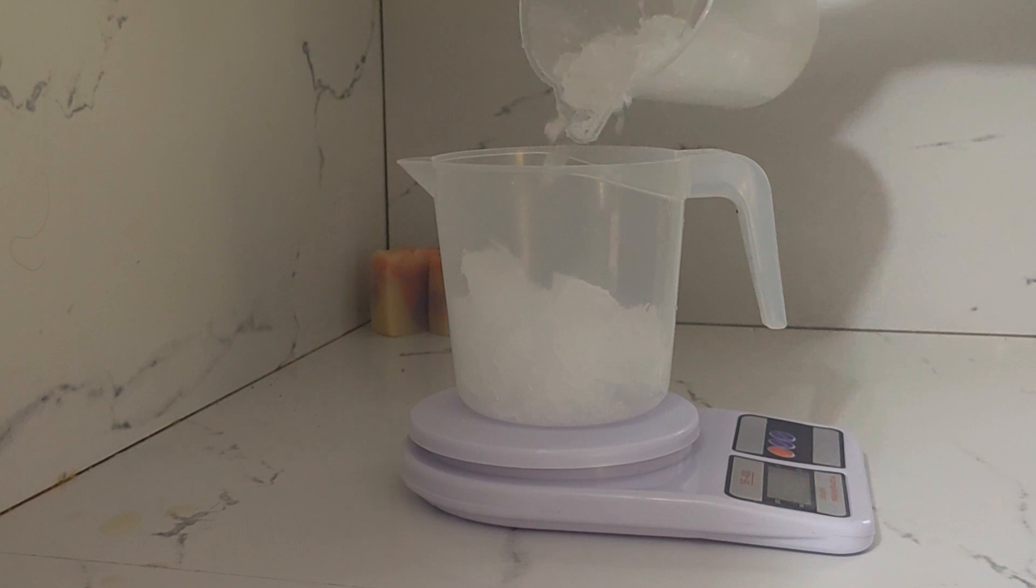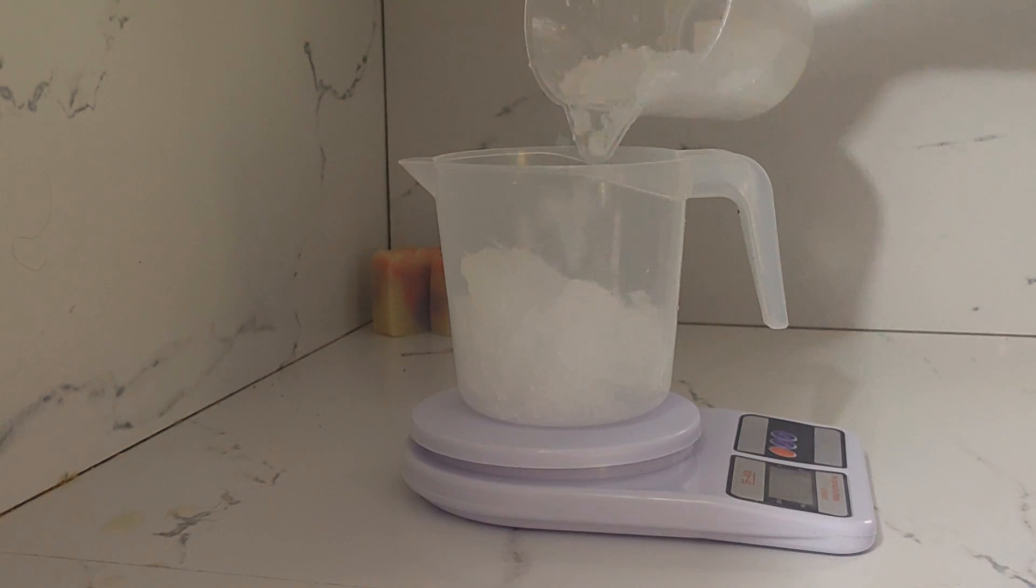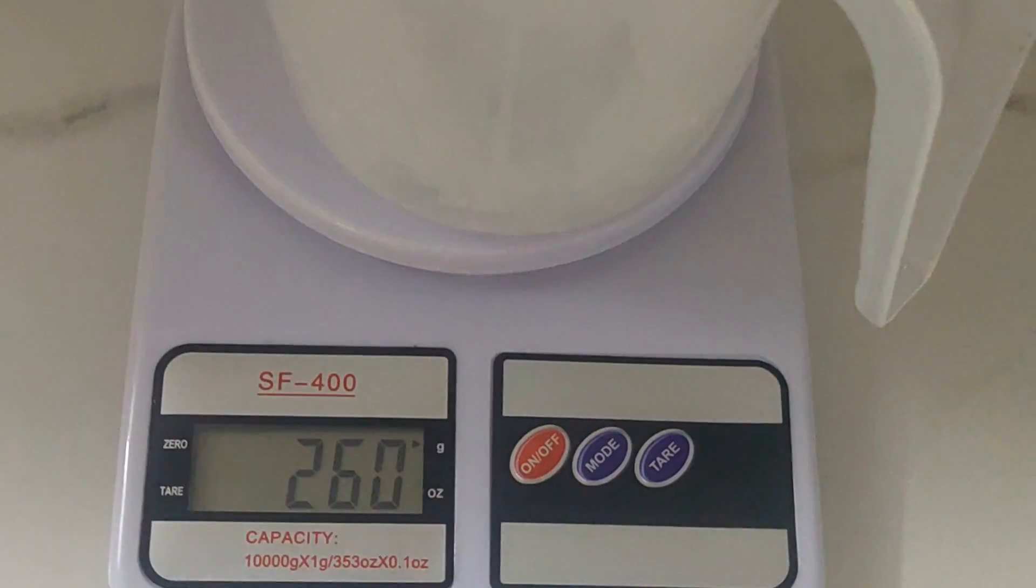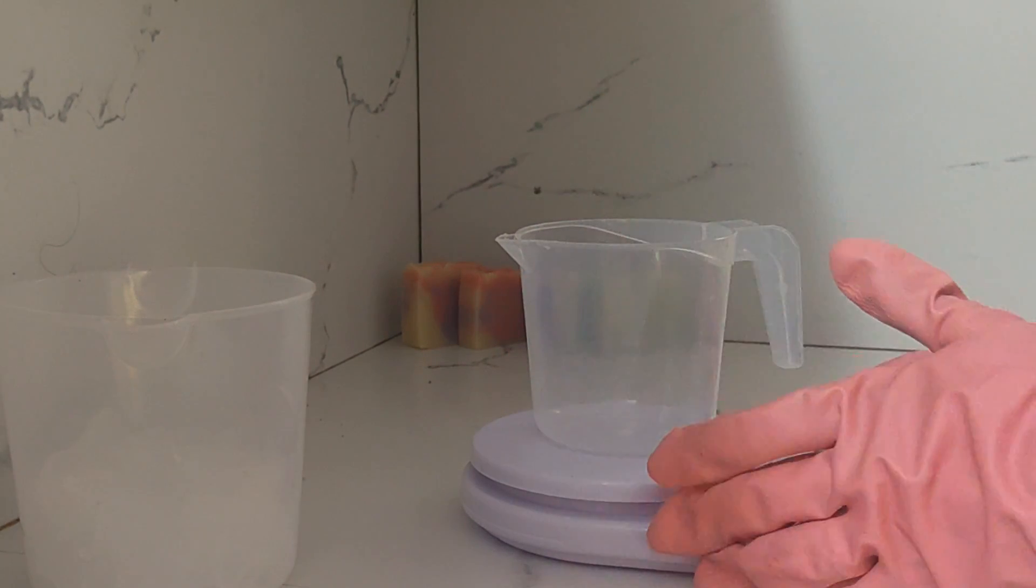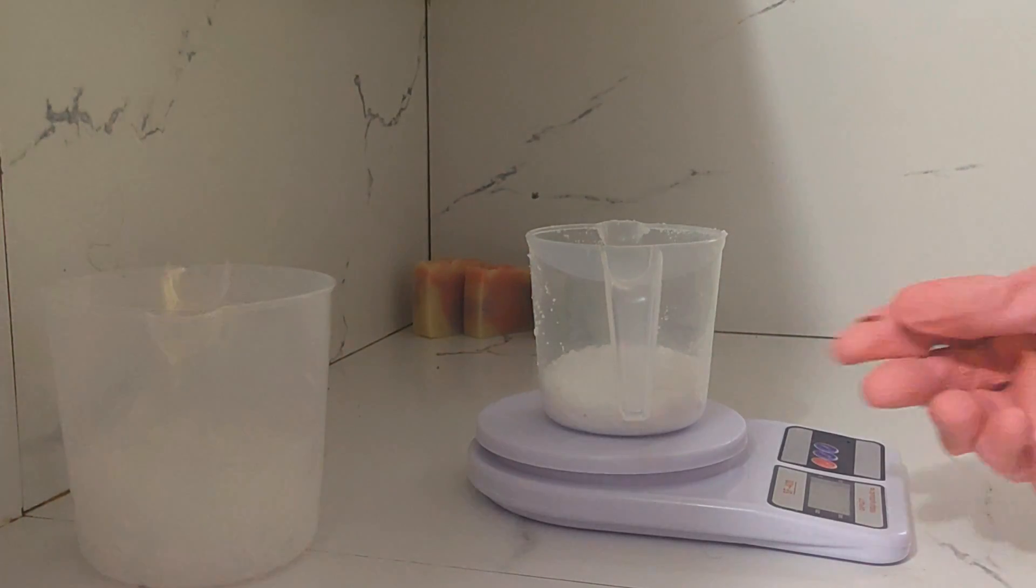Now we are measuring out the ice, using ice instead of water as I've showed you in previous videos so that your caustic soda won't heat up the solution too fast. That was 260 grams of ice.